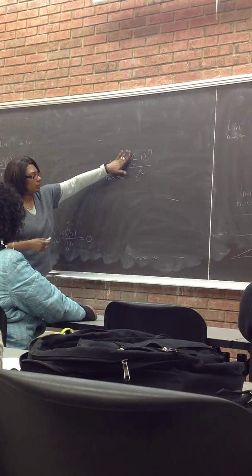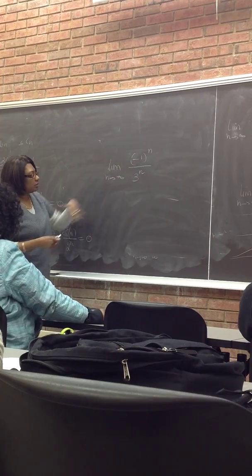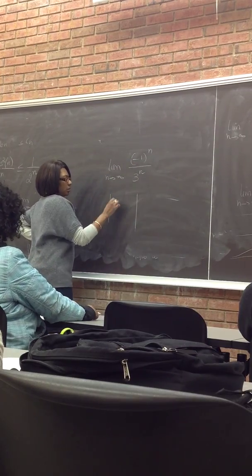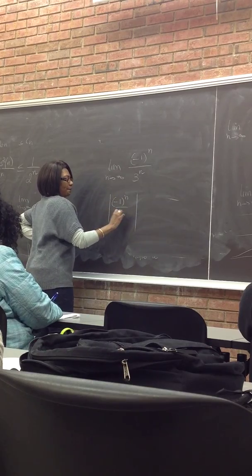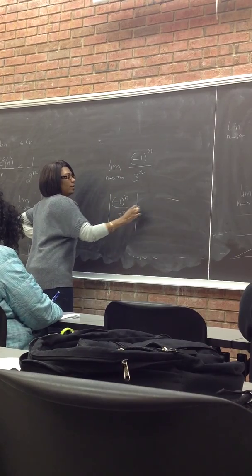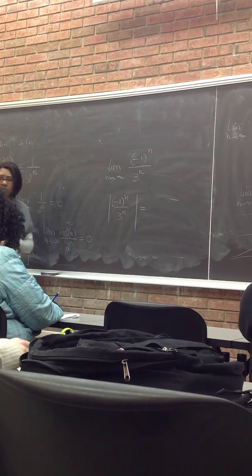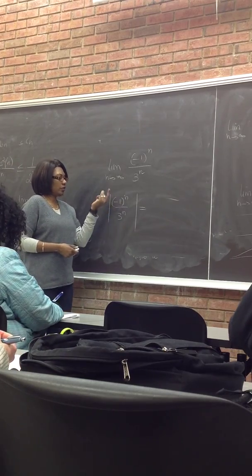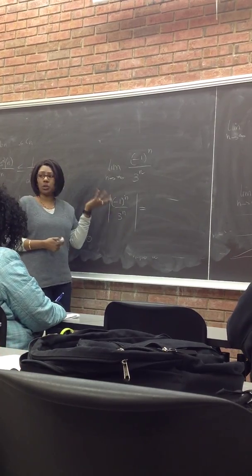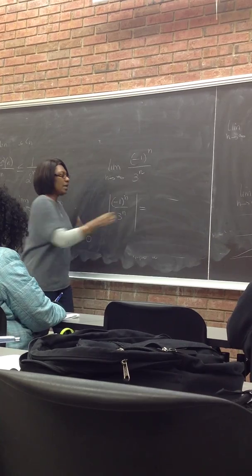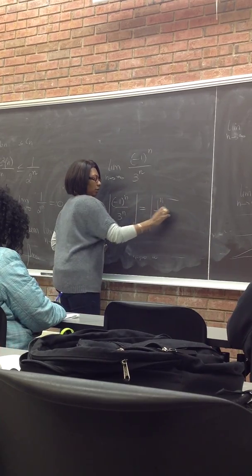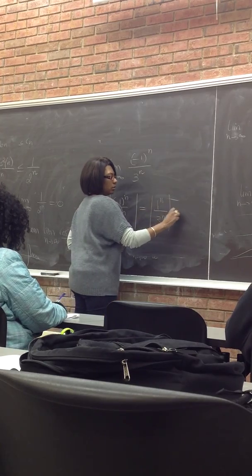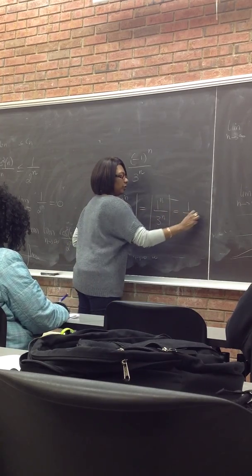But for this type of problem, what we do is find the absolute value of the sequence first — we make the sequence positive. So, the absolute value of negative one to the n: absolute value of minus one is one, absolute value of one is one. So it becomes just one to the n over three to the n. But one to any power is just one, so it becomes one over three to the n.